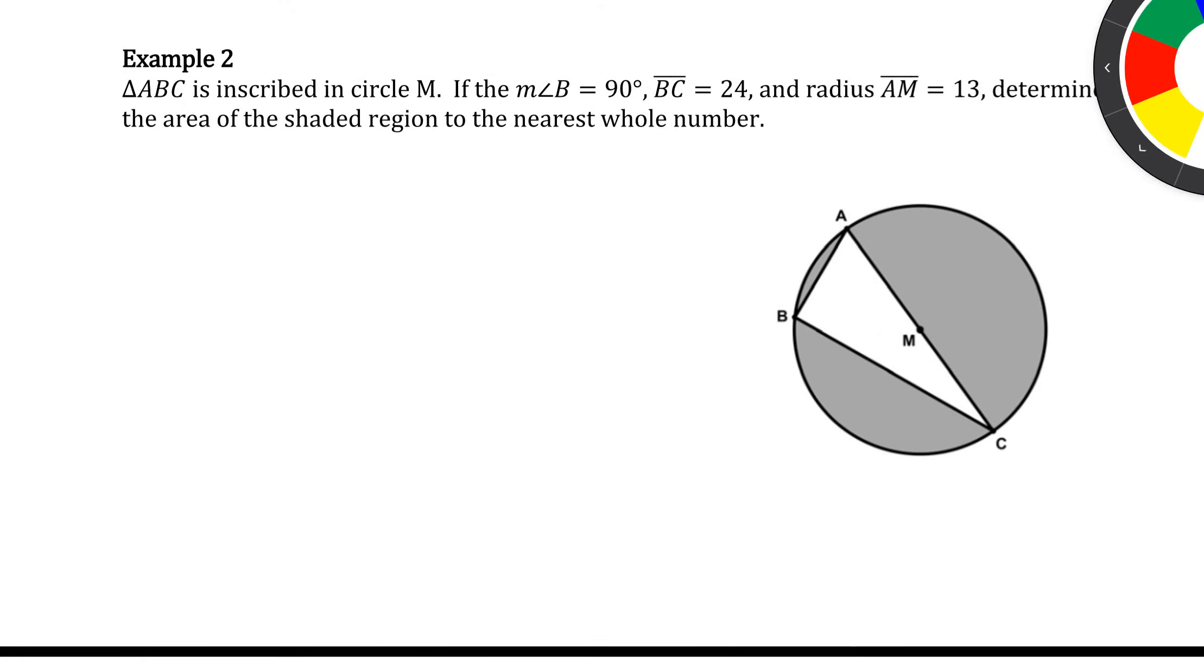So let's take a look at example two. Example two says triangle ABC is inscribed into circle M. Remember, the word inscribed means all of the corners or all of the vertices of the shape are on the other shape. So if you look, A, B, and C are all on the circle. It says angle B is a 90 degree angle. It says BC is 24. It says the radius AM is 13. We know one thing about circles is that any radius is the same. So that means MC is also 13, meaning AC is actually 26. And then it says to determine the area of the shaded region.